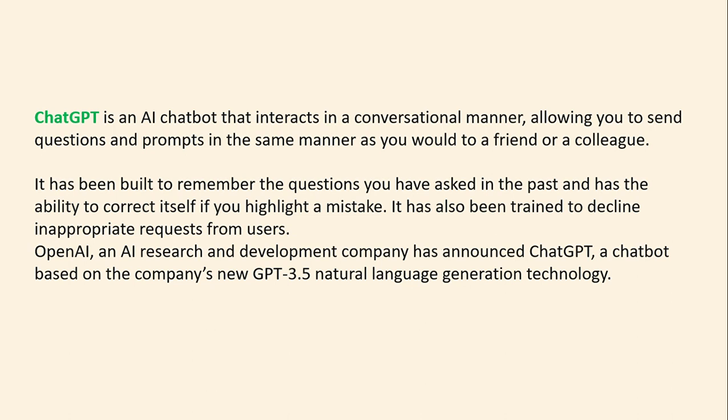ChatGPT is an AI chatbot that interacts in a conversational manner, allowing you to send questions and prompts in the same way as you would to a friend or colleague. It has been built to remember questions you have asked in the past and has the ability to correct itself if you highlight a mistake. It also declines inappropriate requests from users.